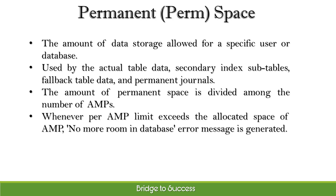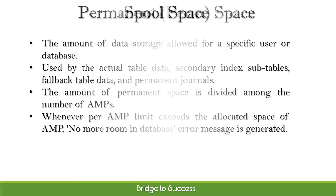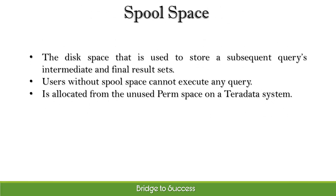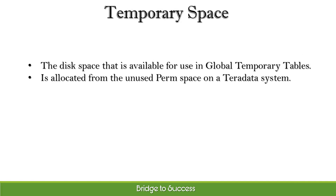The amount of permanent space is divided among the number of AMPs. Whenever a per-AMP limit exceeds the allocated space, a 'no more room in database' error message is generated. Spool space is the disk space used to store subsequent queries' intermediate and final result sets. Users without spool space cannot execute any query. Spool space is allocated from the unused permanent space on a Teradata system. Temporary space is the disk space available for use in global temporary tables, and is also allocated from the unused permanent space.